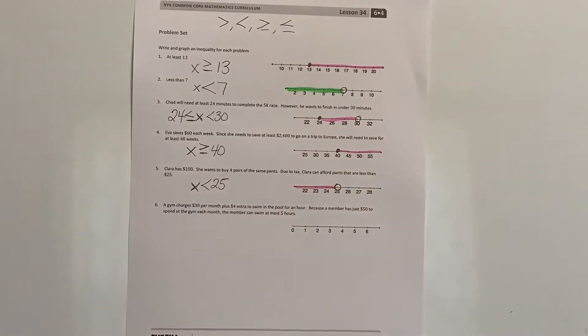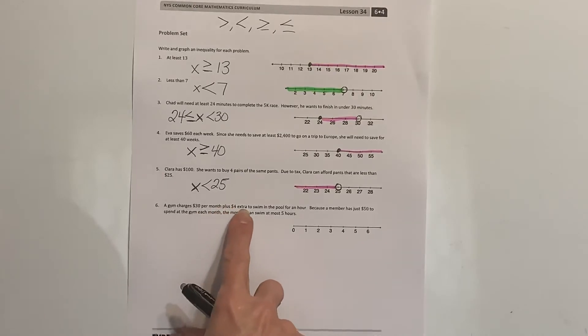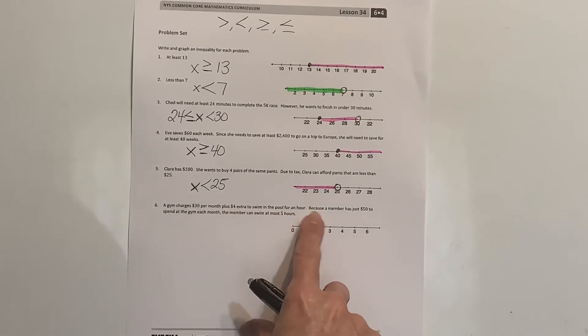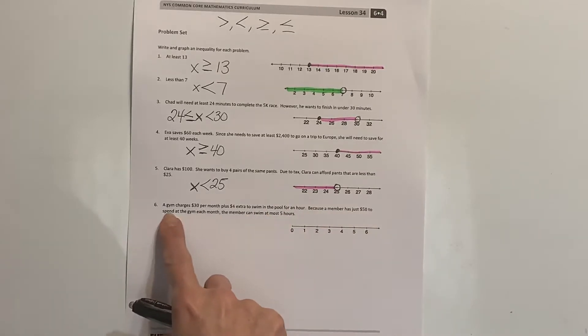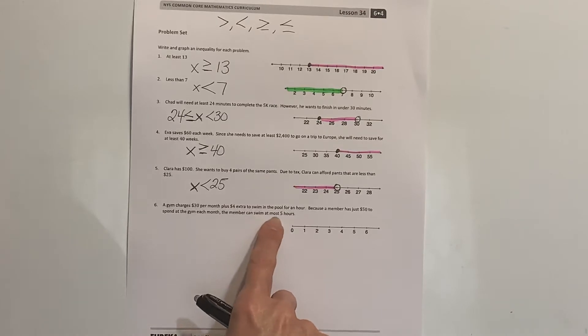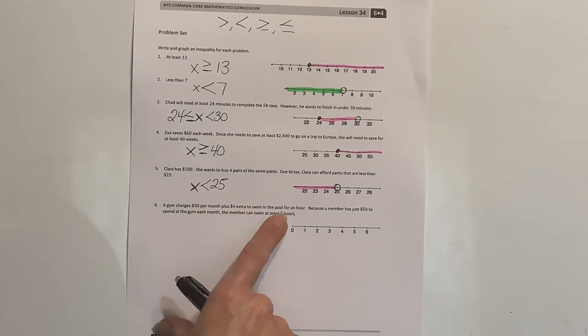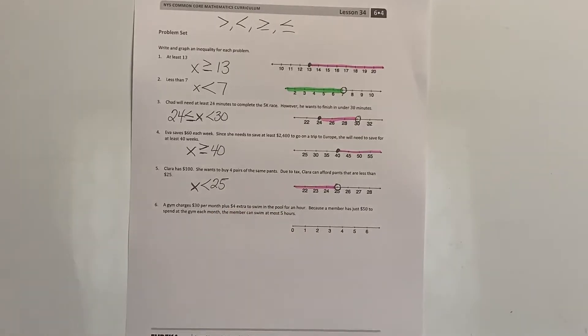A gym charges $30 per month plus $4 extra to swim in the pool for an hour. Because a member has just $50 to spend at the gym each month, the member can swim at most five hours.